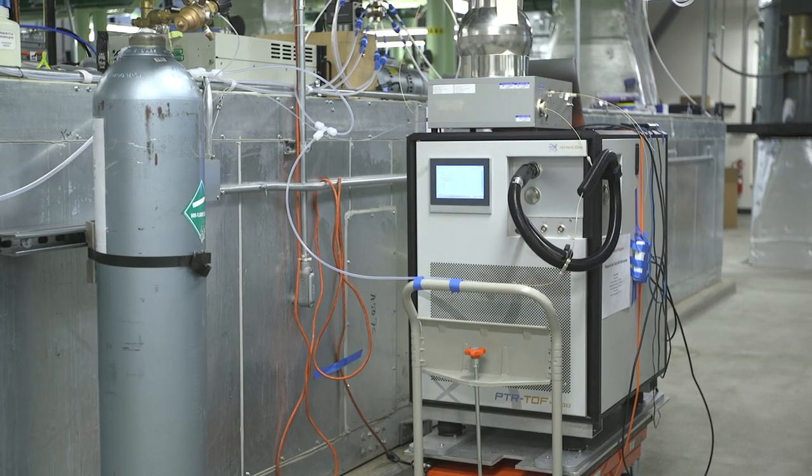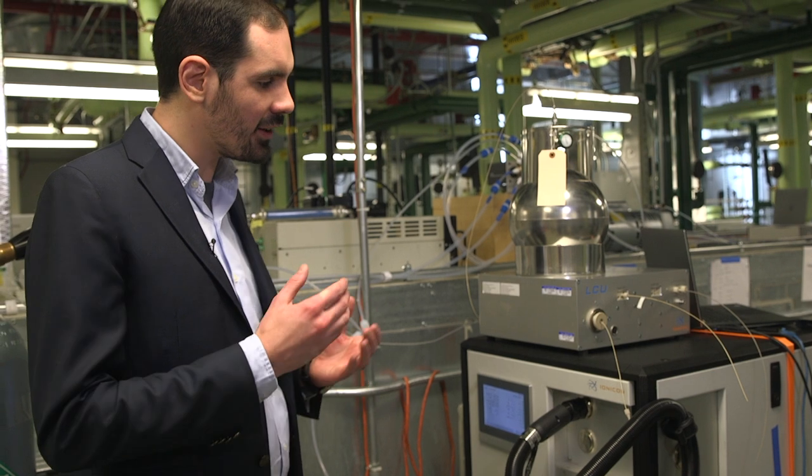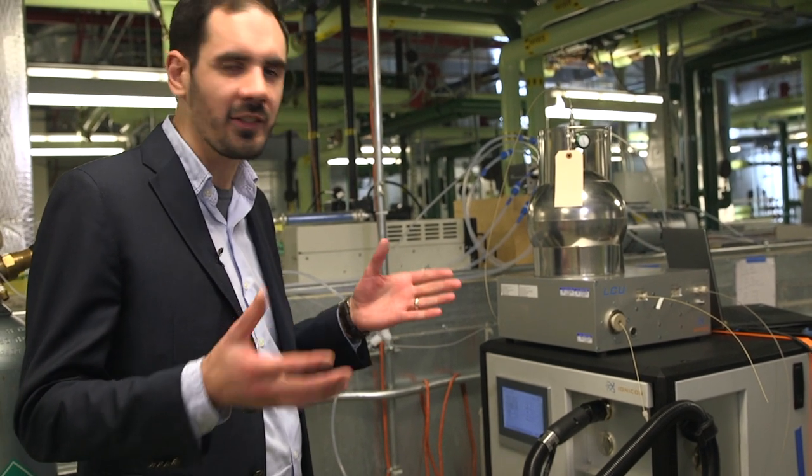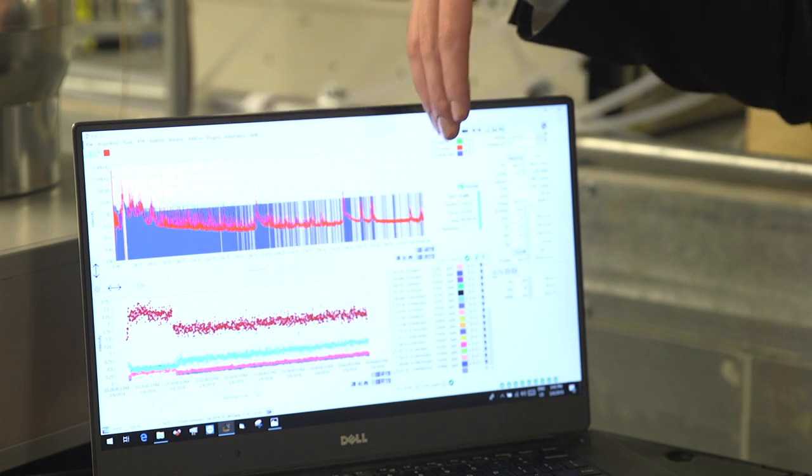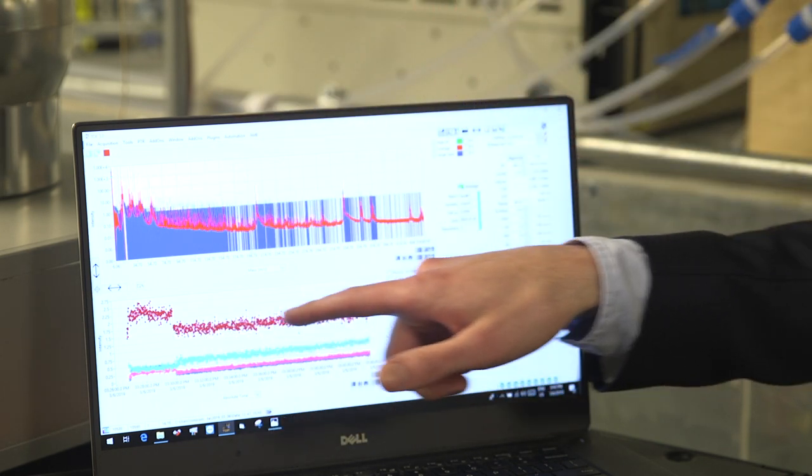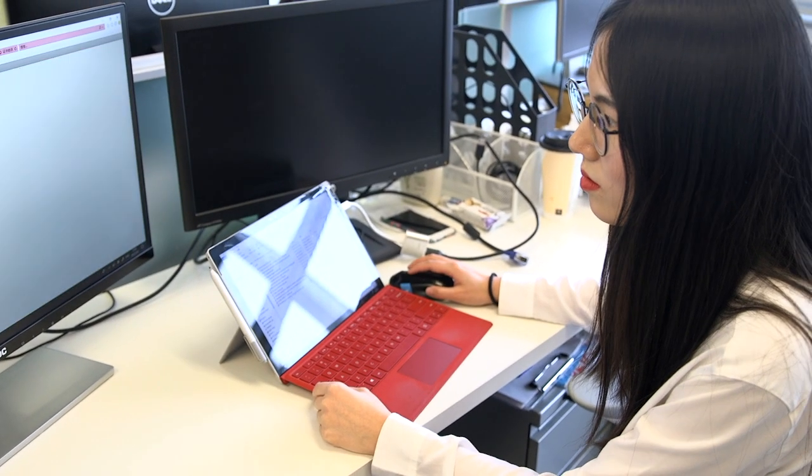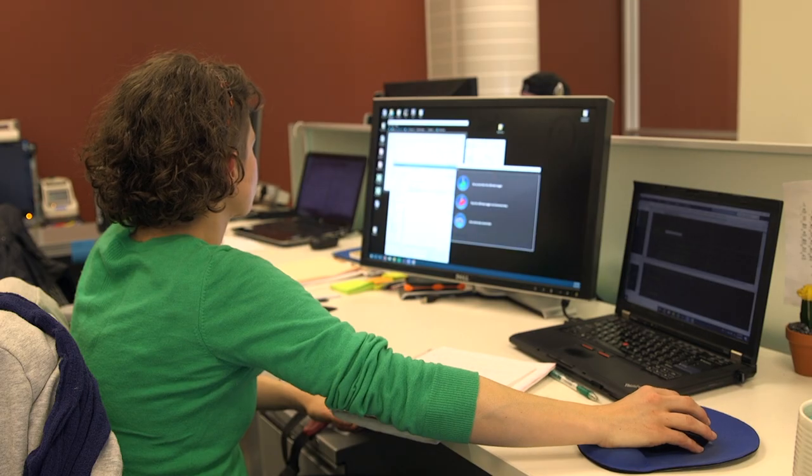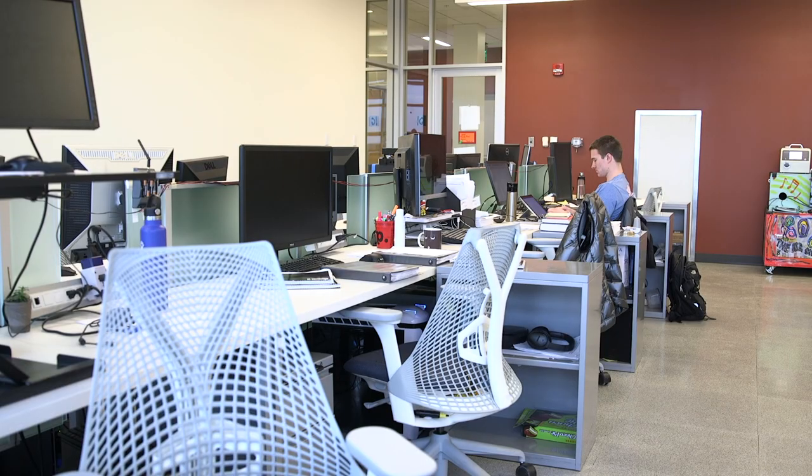So this is a proton transfer reaction time of flight mass spectrometer and it's basically like a highly sophisticated nose. It allows us to sniff the air and see all the volatile organic compounds that are in the air, and it does this in real time second by second. We can see compounds that are released from people through their exhaled breath, also the personal care products that they wear on their bodies such as deodorant, as well as building materials and furnishings.